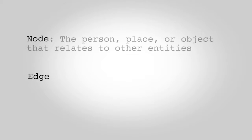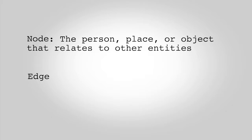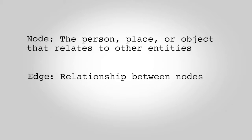Networks are made up of two basic features called a node and an edge. A node is a thing — the person, place, or object — that has a relationship. Nodes are connected by edges. Edges are the relationship between the nodes.